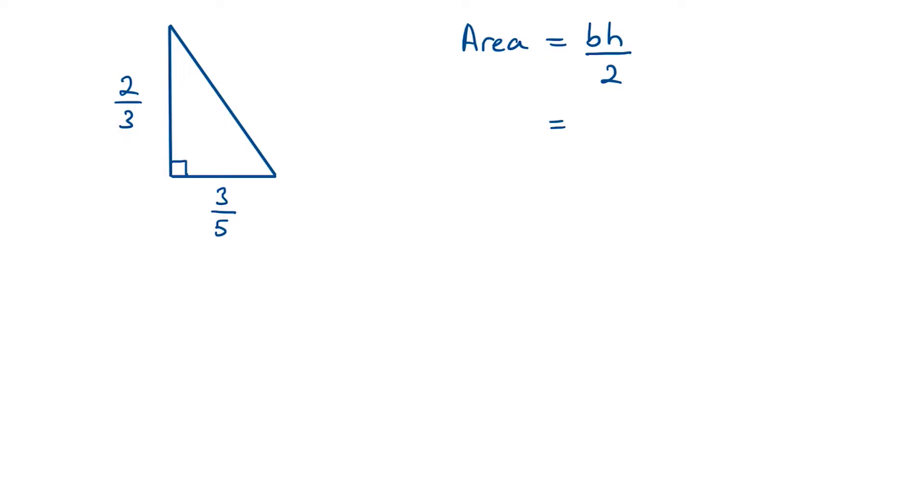Now we can substitute in the measurements we know. We know the base is 3 over 5, so 3 fifths. That is multiplied by the height, which is 2 thirds. And that is all over 2.